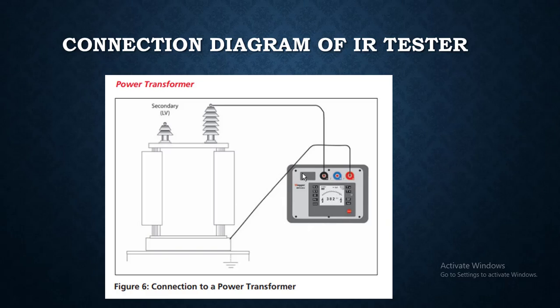Hey friends, if you want to test transformers, the diagram is very simplified here. The object under test is the HV bushing, and it is connected to the terminal like this - the negative terminal, where the positive terminal is connected to ground. There could be several combinations if you want to test this.